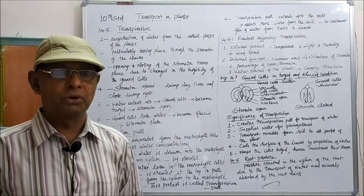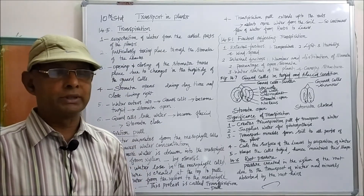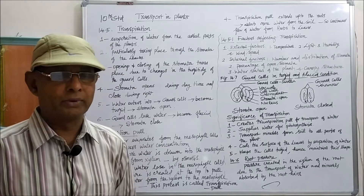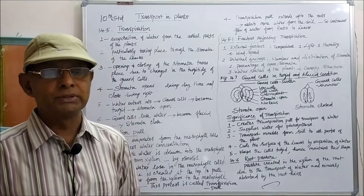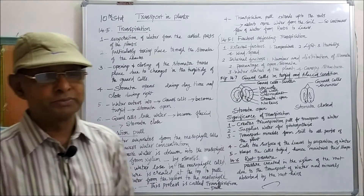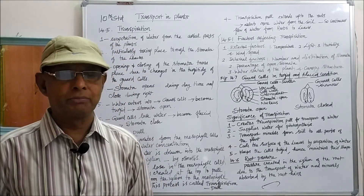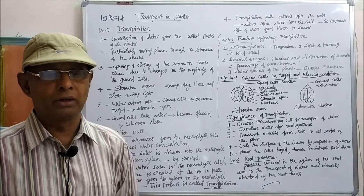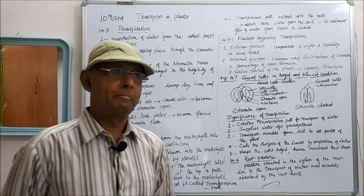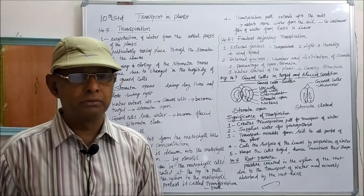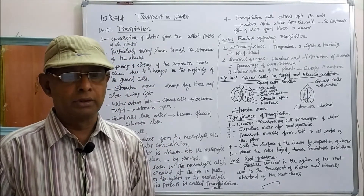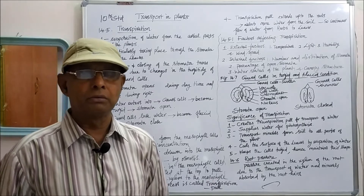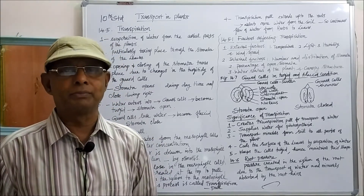As water is lost from the mesophyll tissue of the leaves, a pressure is created at the top of the mesophyll cells to pull more water from the xylem to the mesophyll cells. This process is called transpiration pull. Transpiration pull is mainly responsible for absorption of water from the soil by the root hairs. Transpiration pull extends up to the roots, causing the roots to absorb water from the soil to ensure continuous flow of water from the roots to the leaves.